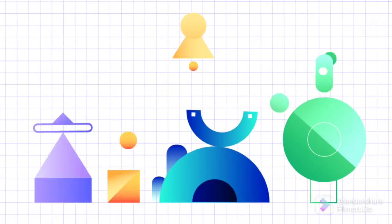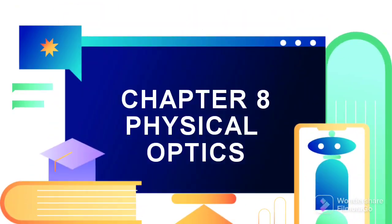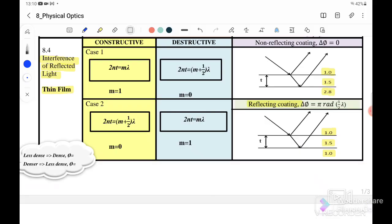Hello, welcome back to my channel. Today we will continue with Chapter 8: Physical Optics. In this video we are going to learn 8.4 Interference of Refracted Light, which is the thin film. For thin film, we have two cases.